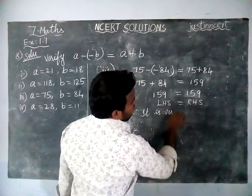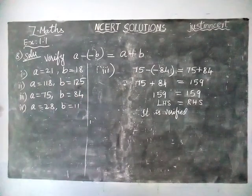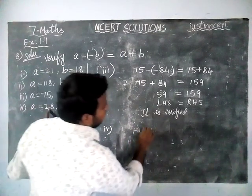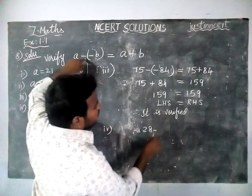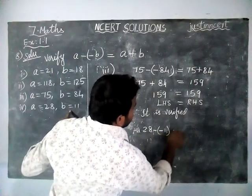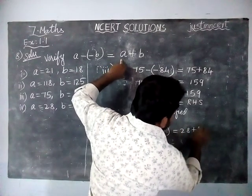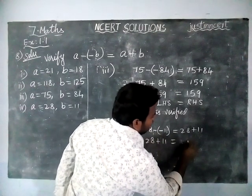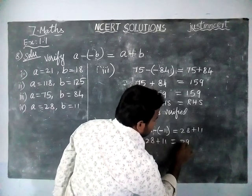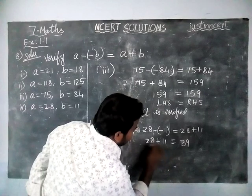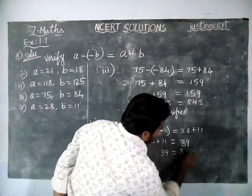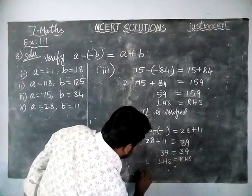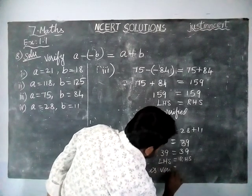Fourth option: A value is equal to 28 and B value is equal to 11. Substituting: 28 minus (minus 11) is equal to 28 plus 11. Adding: 8 plus 1 is equal to 9; 2 plus 1 is equal to 3. So 39 is equal to 39. Left hand side is equal to right hand side, therefore it is verified.